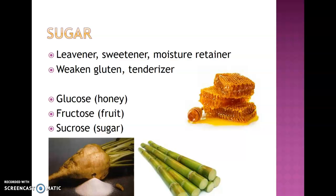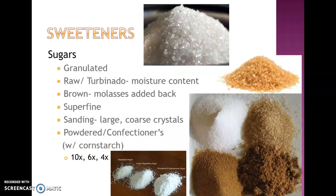Sugar comes from two main sources: your sugar beets and your sugar cane. There are a couple specific sugars that we talk about. Glucose coming from honey, fructose coming from fruit, and then your sucrose coming from sugar. Below I have your sugar beets and your sugar canes here to show you as an example.